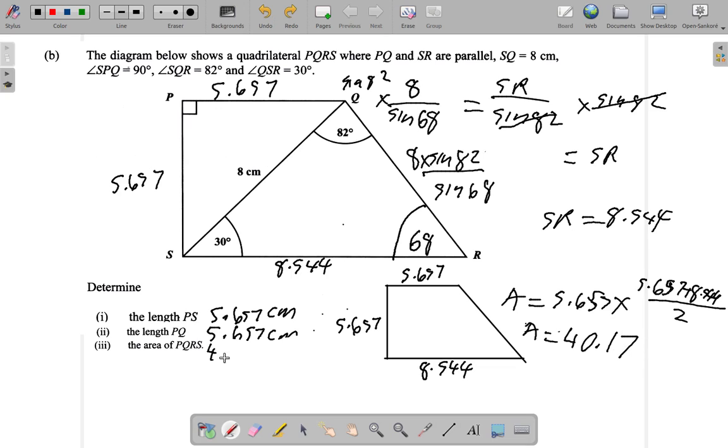So you have 40.17 centimeters squared. I'll always write the units. That's using the trapezium.